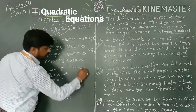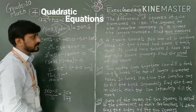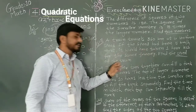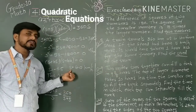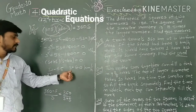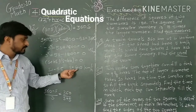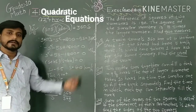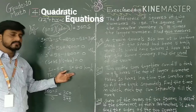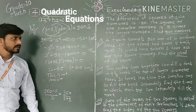Therefore the speed is equal to 40 km per hour. The uniform speed of the train is 40 km per hour.